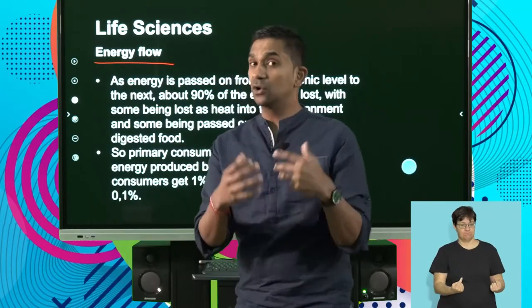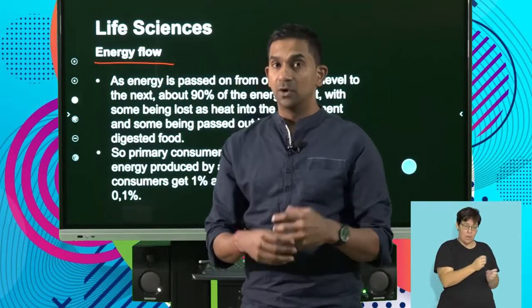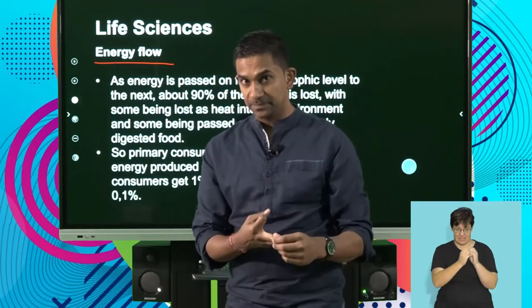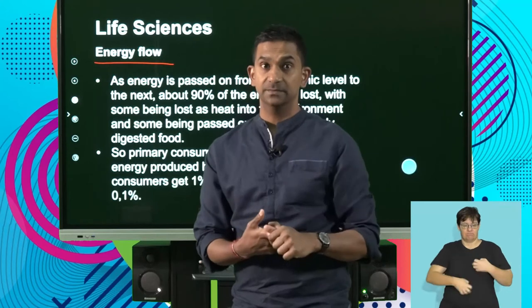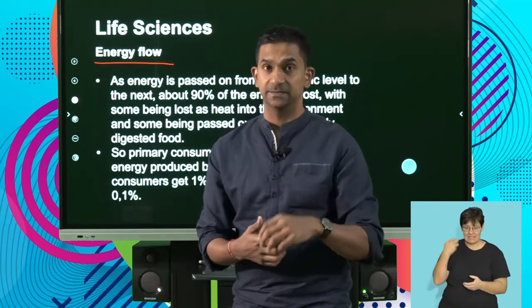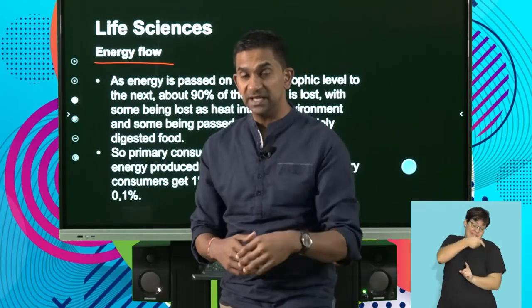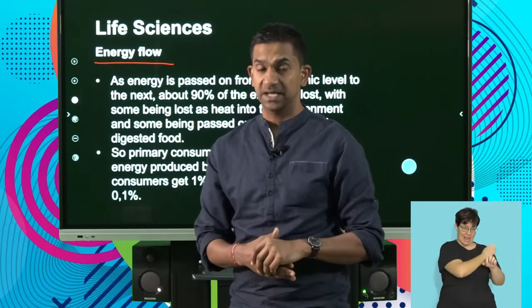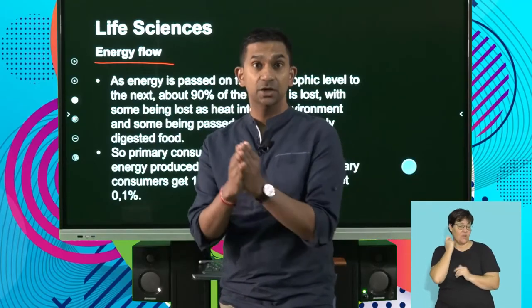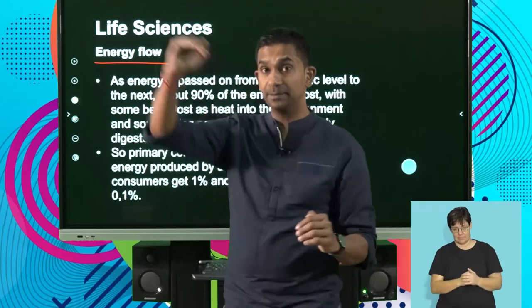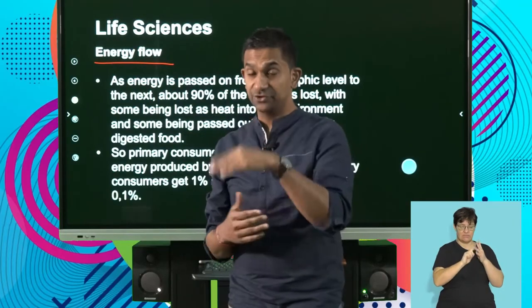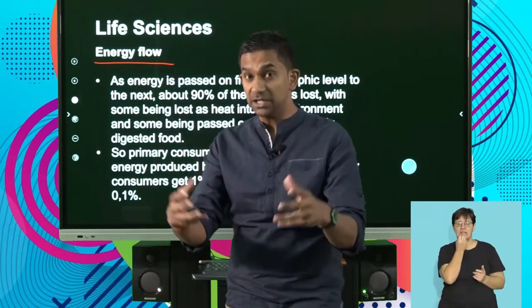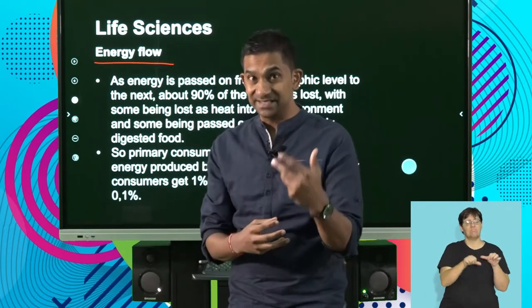Some energy is lost during metabolism, some as waste and heat. So the next trophic level will always get a significant reduction in the amount of energy available. As we move up the trophic levels, some species higher up need to consume larger volumes of food to sustain the energy they need. About 90% of energy is lost as we pass from one trophic level to the next — some as heat and some as undigested food.